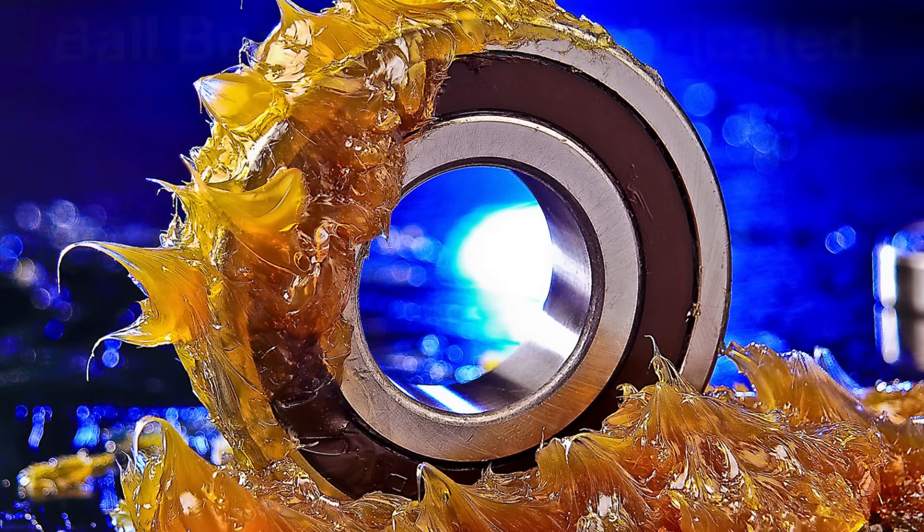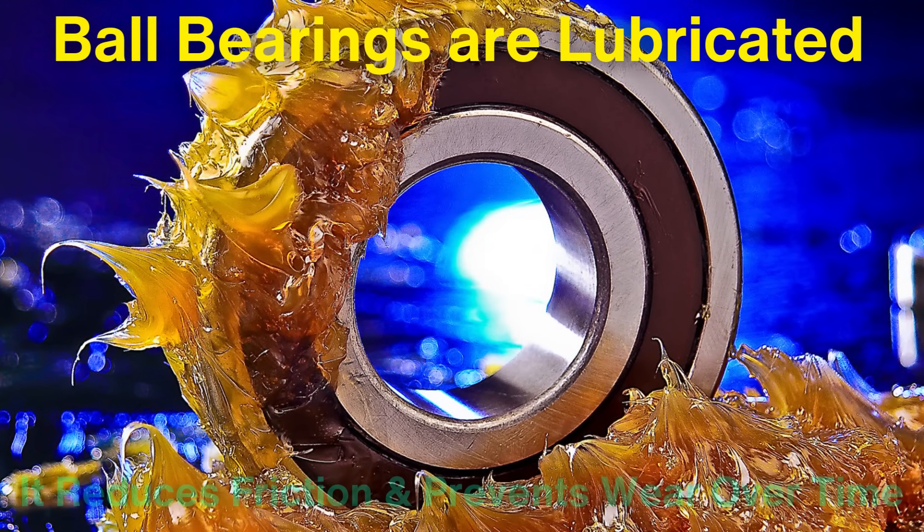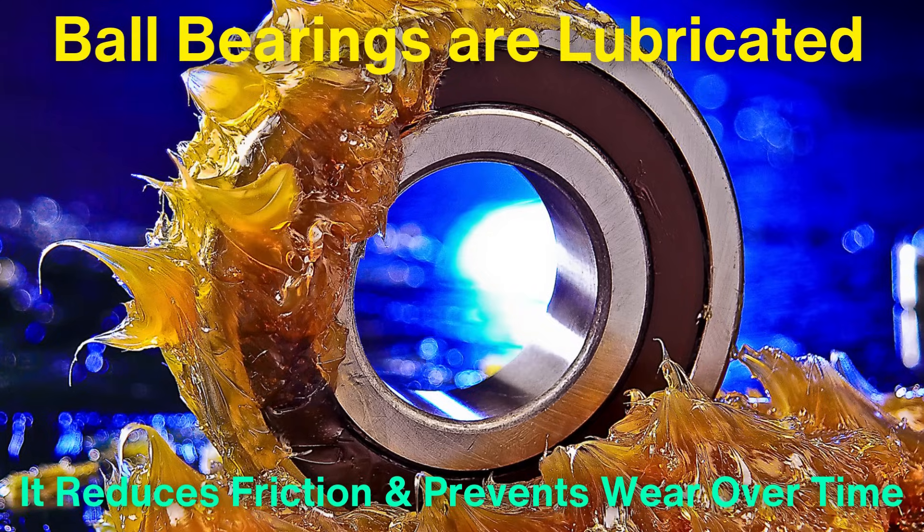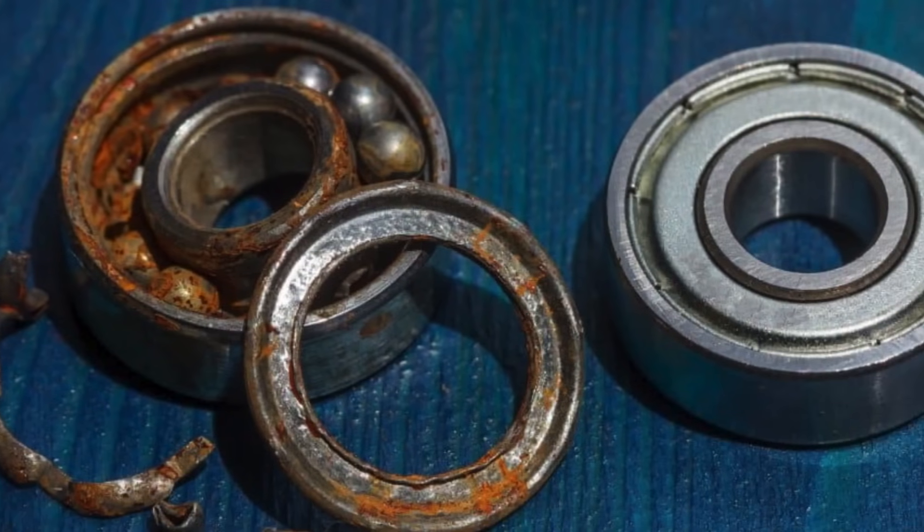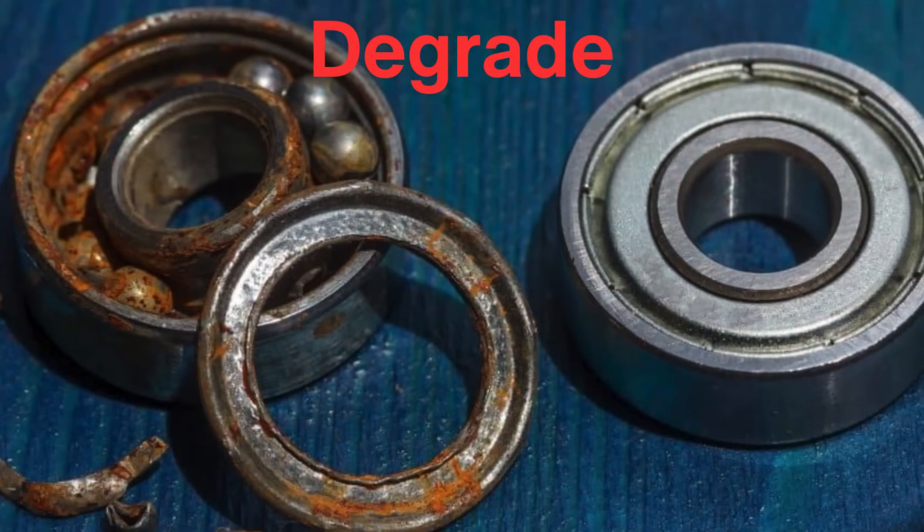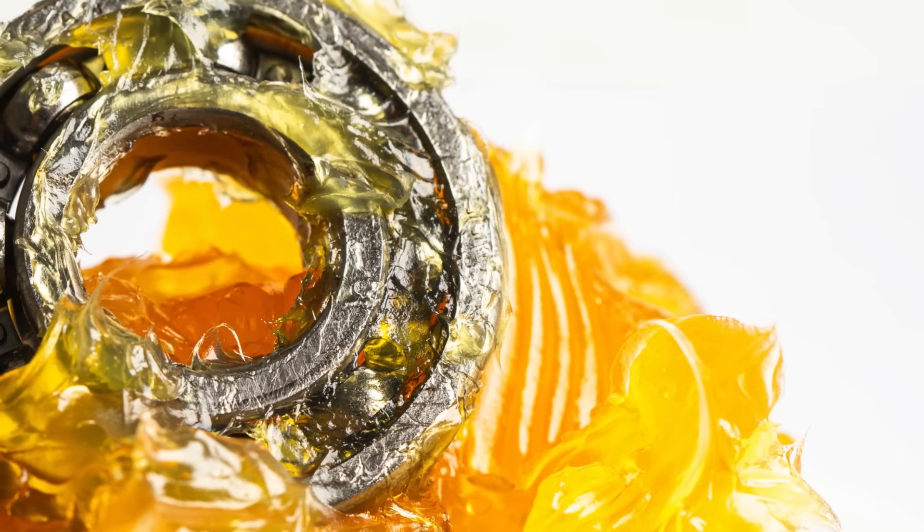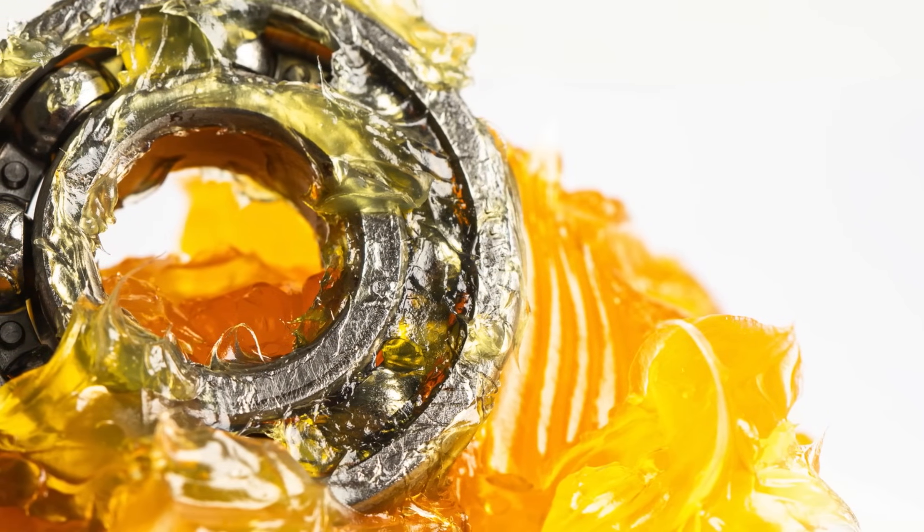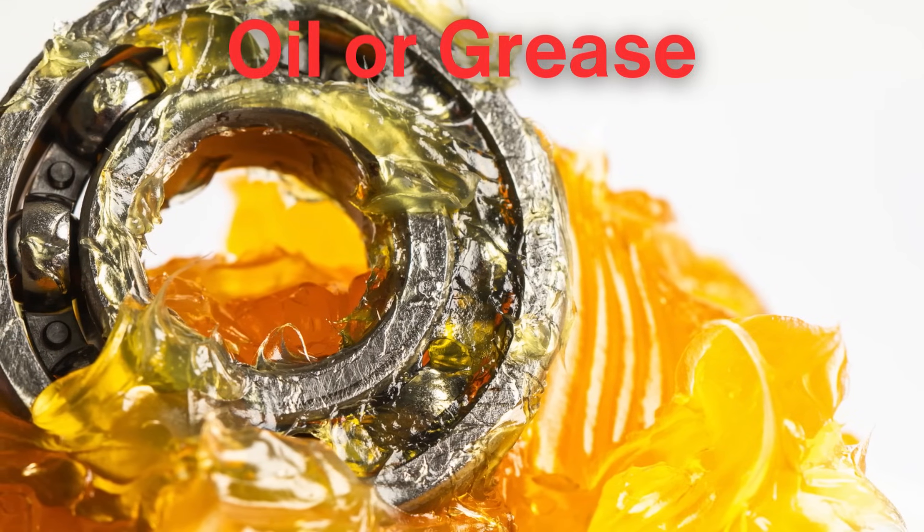At this point, the ball bearings are lubricated. Lubrication is critical for ball bearings because it reduces friction and prevents wear over time. Without proper lubrication, ball bearings would quickly degrade due to the constant metal-on-metal contact. Depending on the application, different types of lubricants are used, including oil or grease, which ensures smooth operation for a long time.